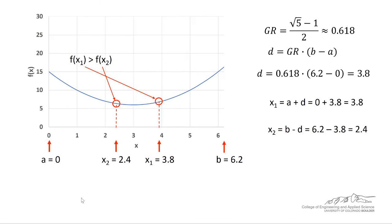So we move on to the next iteration. Our interval starts at zero and goes up to 6.2, which is left over from the previous iteration. We can calculate x1 and x2 after we calculate d, and we go through this, and we find an x1 of 3.8, x2 equals 2.4. In this case, since f(x1), just like the previous iteration, is greater than f(x2), we eliminate everything to the right of x1, and x1 then becomes our new upper bound.